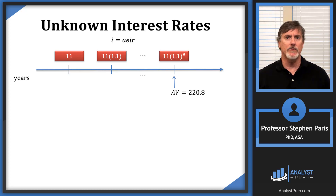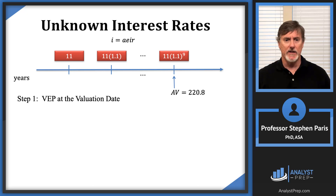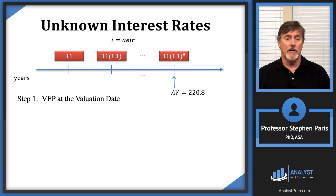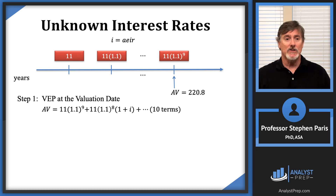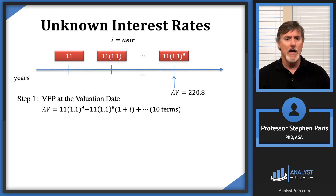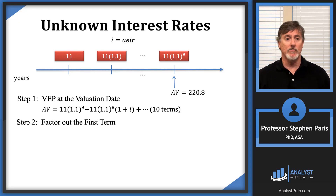For geometric annuities I use a three-step process. Step one is to value each payment at the valuation date (VEP). Starting with the last payment — it's already at the valuation date, so its value is 11 times 1.1 to the ninth. The payment immediately before that is 11 times 1.1 to the eighth, and I accumulate it one year by multiplying by (1+i). Those are the first two terms, and there are 10 payments so there will be 10 terms.